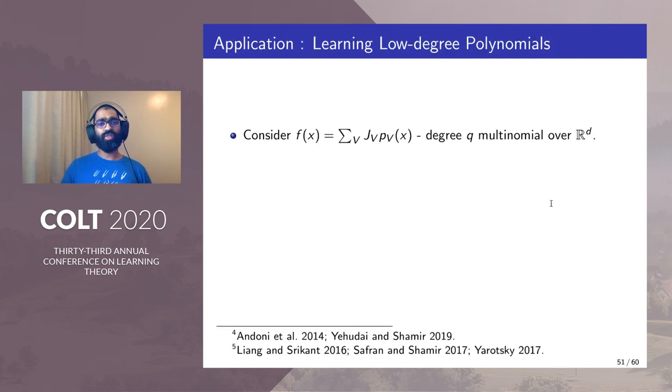An application of these representation results is the learning result for low degree polynomials. We consider f(x) which is a multinomial of degree q over ℝ^d where each p_v is a monomial of degree at most q.